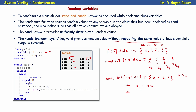If I randomize again for a next sequence, I might start with any value, for example 3. Then the next calls will give values other than 3, covering the remaining values like 2, 0, 1. So a second sequence might be 3, 2, 0, 1 — again covering all values in the range. In randc, all possible values must be covered before any value repeats.